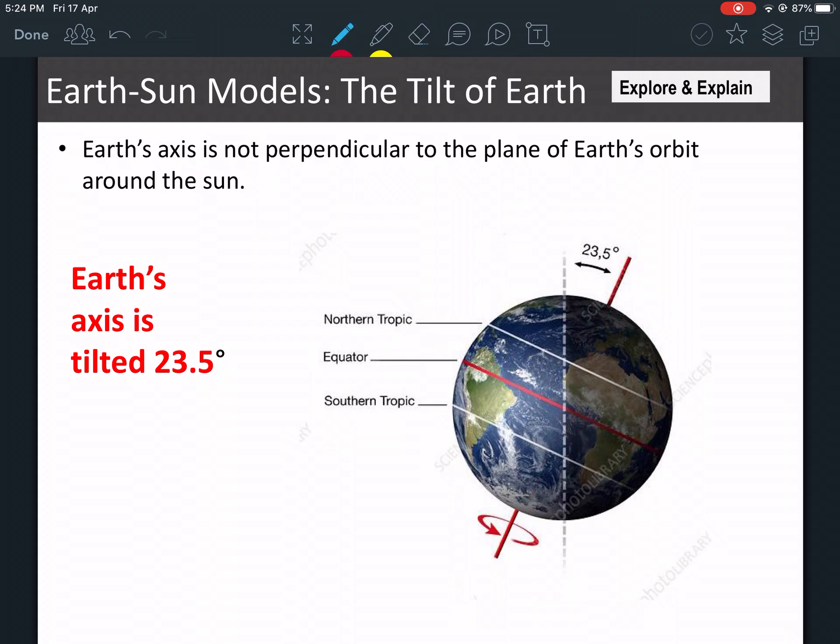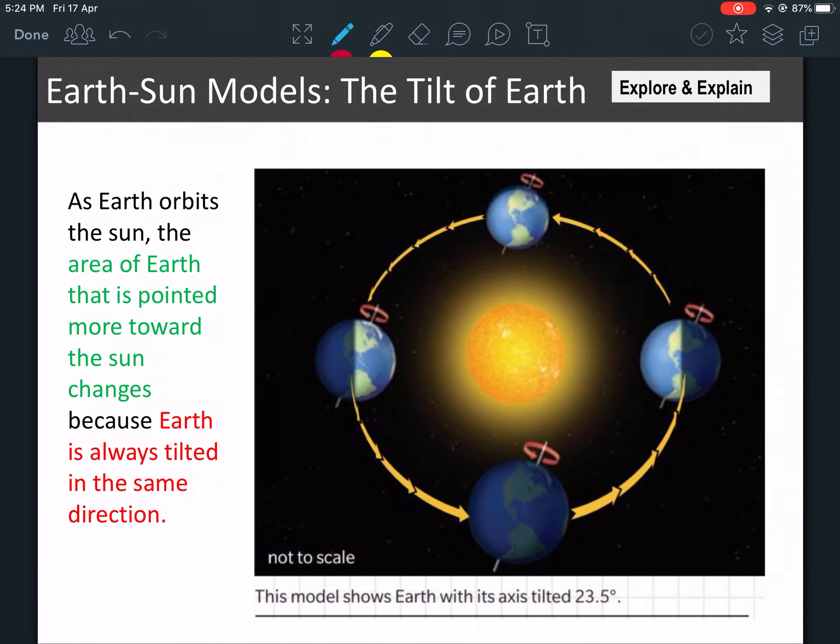So because it has a tilt, this affects how much sunlight the areas are getting when it moves around the Earth. So first thing you gotta know here is the Earth is tilted 23.5 degrees. Now look at that. As Earth orbits the Sun, the area of the Earth pointed more toward the Sun changes.